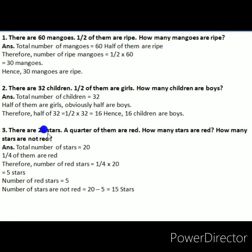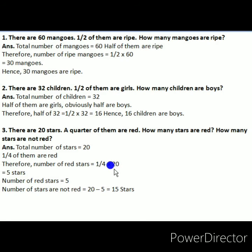Question 3: there are 20 stars; a quarter of them are red — how many stars are red? Here we find a quarter, not a half. Quarter means one-fourth of 20. Multiply one-fourth by 20: 20 divided by 4 equals 5. So there are 5 red stars.